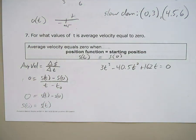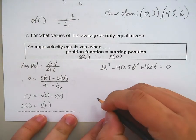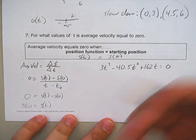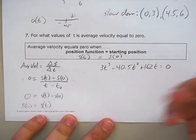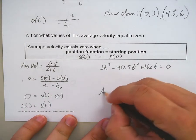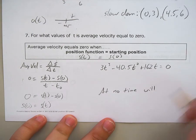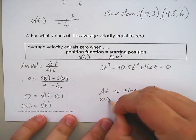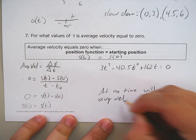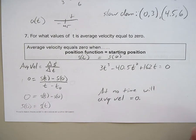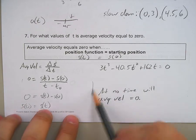All right? So because this thing will not hit zero, I'm going to write you can say at no time, at no x value, or at no values of t, however you want to say it. I'll say at no time, will the average velocity equal zero. At no time will average velocity equal zero.